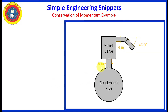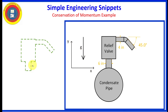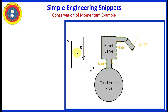Here are the provided dimensions of the angle of the outlet pipe, and here's our coordinate system that we've chosen. Gravity is in the minus y direction. Let's define our control volume, which is going to be the actual relief valve and all the water inside of it.